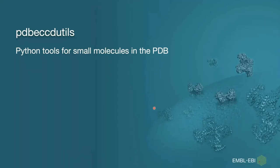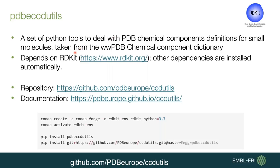The second package I'd like to talk about is called PDBE-CCDUtils, and it's a set of Python tools for working with small molecules in the Protein Data Bank. CCDUtils is a package we use internally in our chemistry process. It depends on the RDKit data model, and other dependencies are installed automatically. The best way to handle dependencies is through the Conda Environment Manager, so first create an RDKit environment with RDKit installed, activate the environment, and then install PDBE-CCDUtils either from PyPI or directly from GitHub.